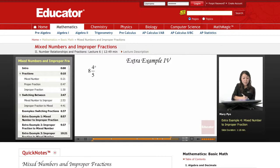So this fourth example, this fraction right here, is called a mixed number because we have a whole number and we have a proper fraction.